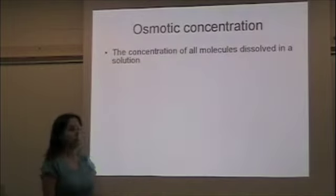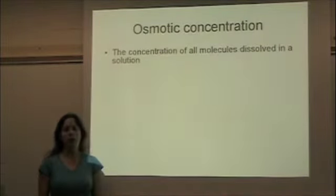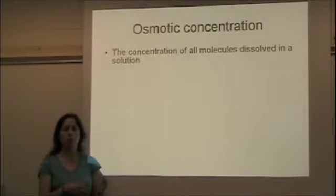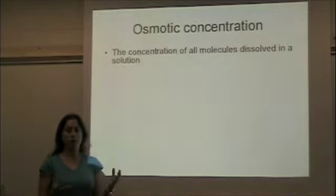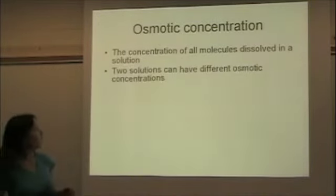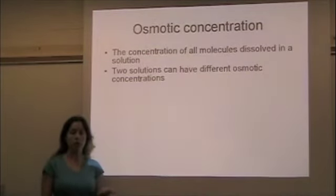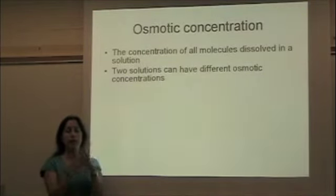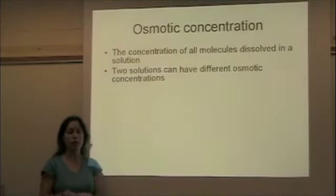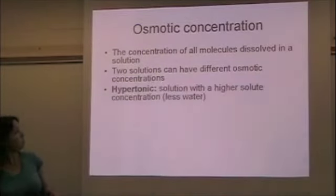The osmotic concentration is the concentration of all the molecules dissolved in water. So it could be a combination not just of salt, but salt plus sugar plus other molecules, and all of those molecules would make up the osmotic concentration. Two solutions can have two different osmotic concentrations, as we just saw in that last picture — one area with lots of solutes and the other with no solutes.